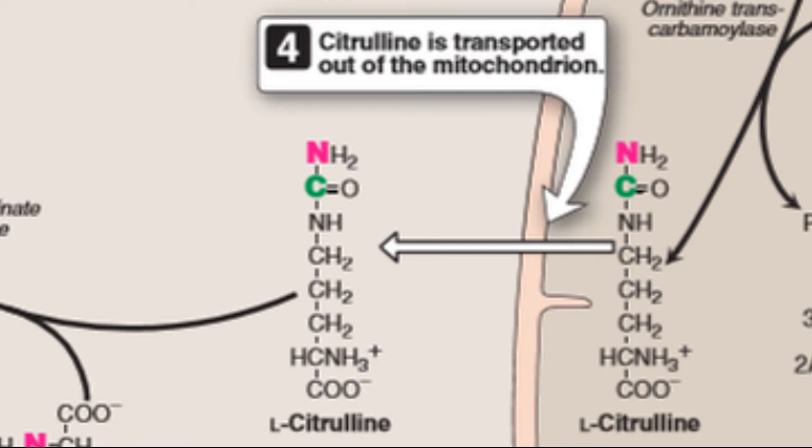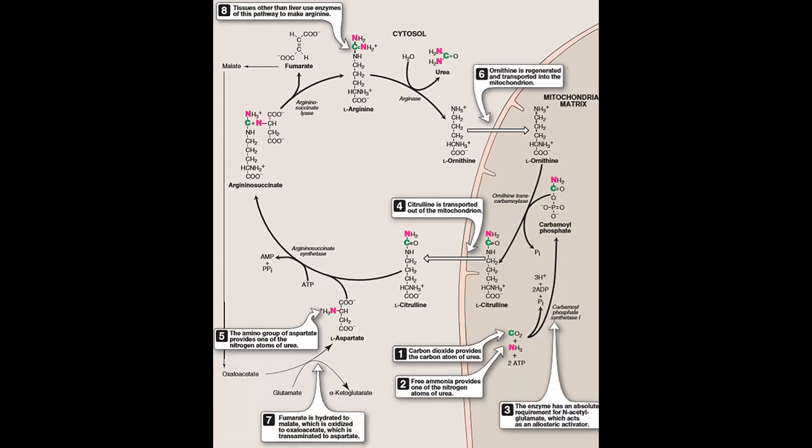Ornithine is generated with each turn of the urea cycle, much in the same way that oxaloacetate is regenerated by the reactions of the citric acid cycle. If you remember the citric acid cycle, you'll know that oxaloacetate is regenerated with each turn of the cycle.